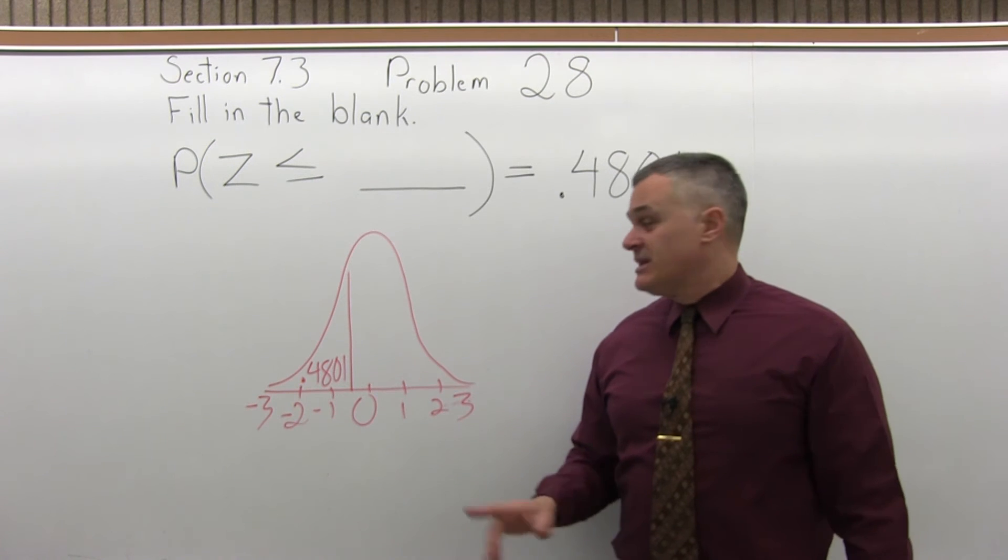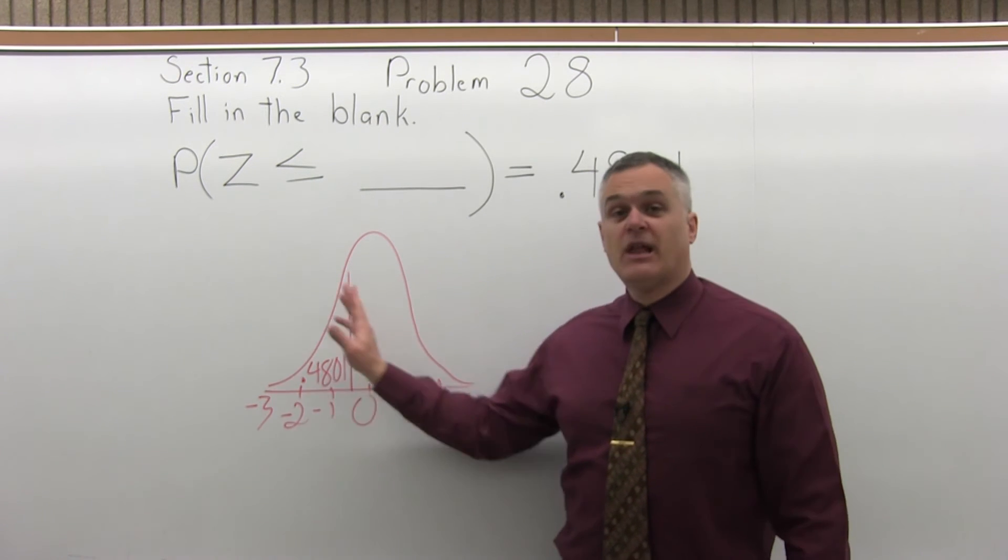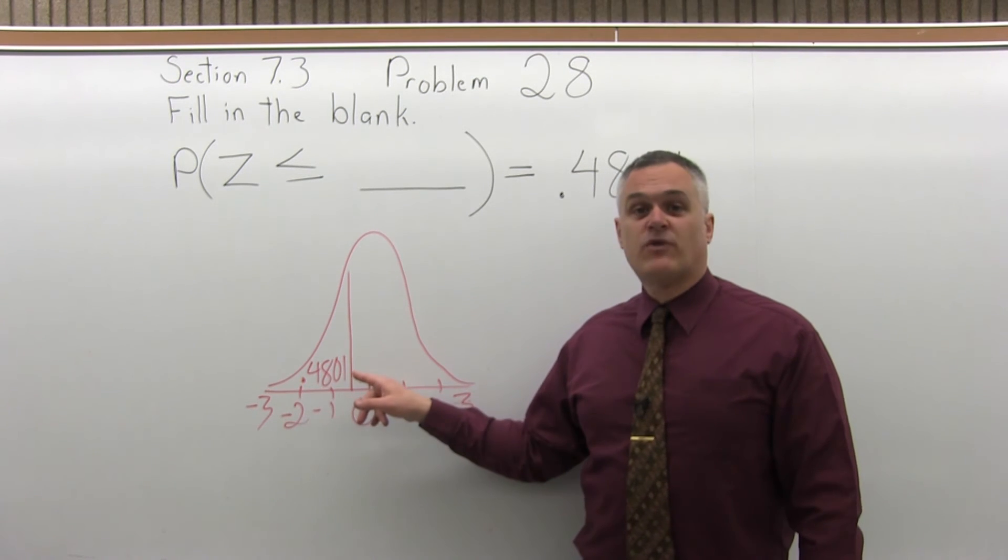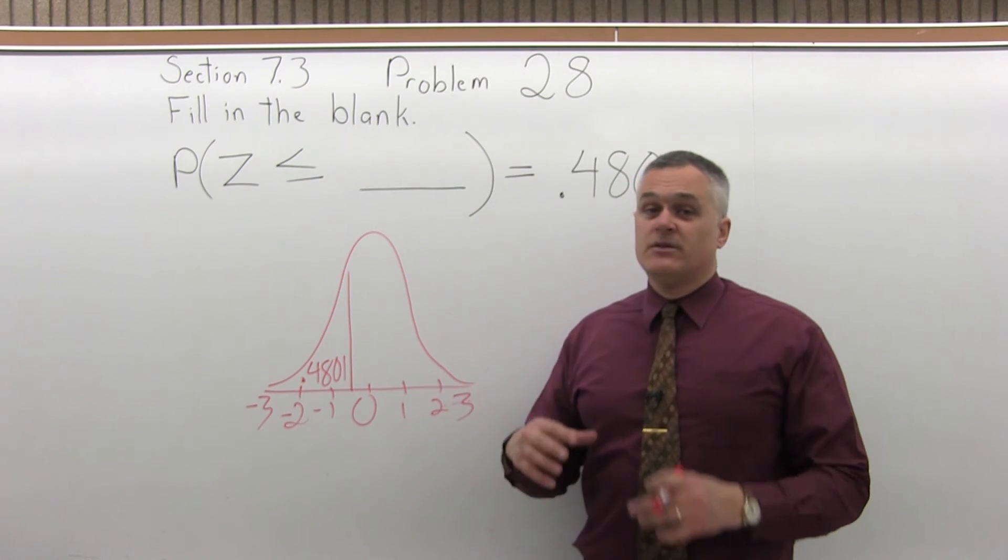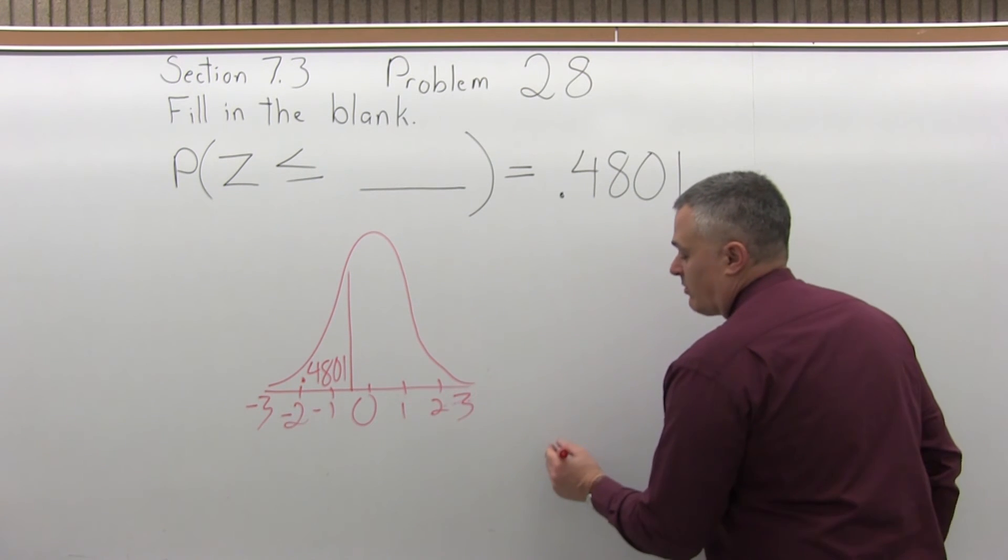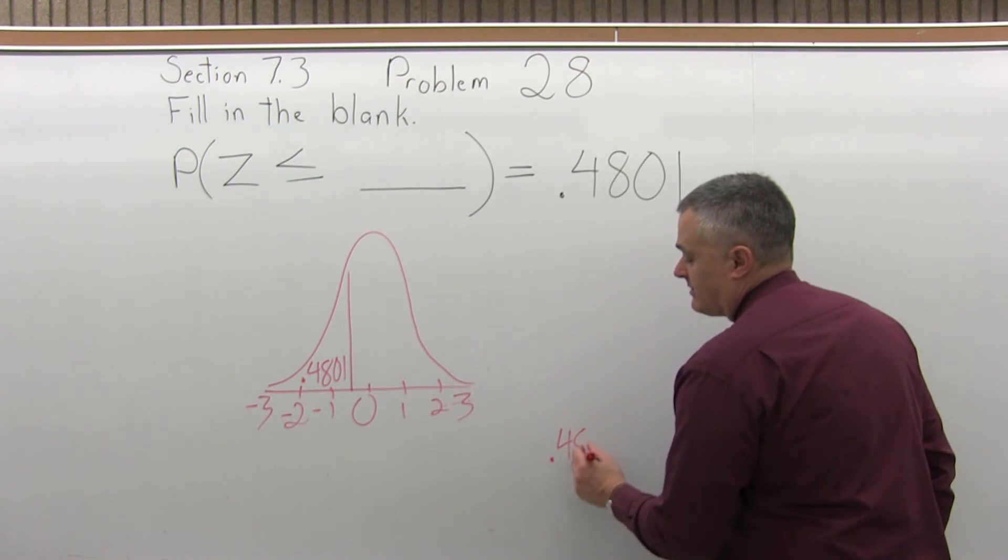The chart is set up to tell me the probability of being to the left of what I look up. So I want to look in the center part of the chart, the middle part, and find .4801. The numbers in the middle of the chart go in order, so you'll find .4801 in the chart.